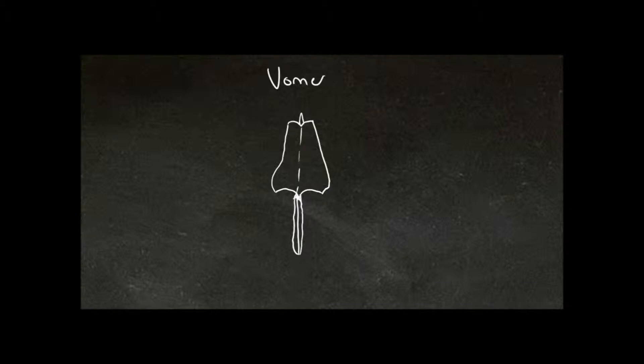Here we're looking at the posterior aspect of the vomer and now we can see the alar. We can also see that the alar are more towards the superior portion of the bone and not the inferior portion, and this is the way in which we can tell superior from inferior.